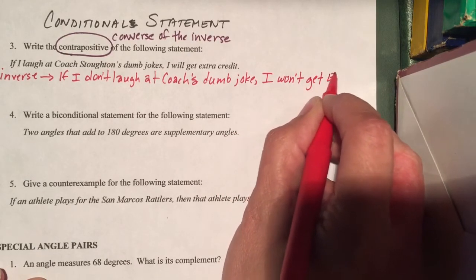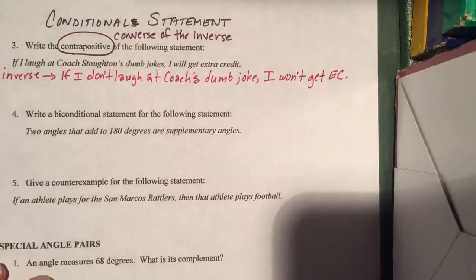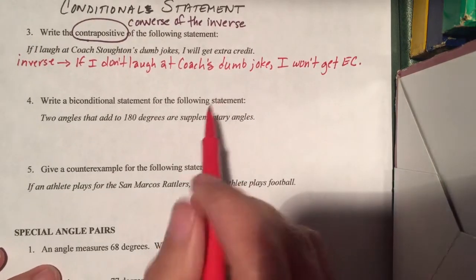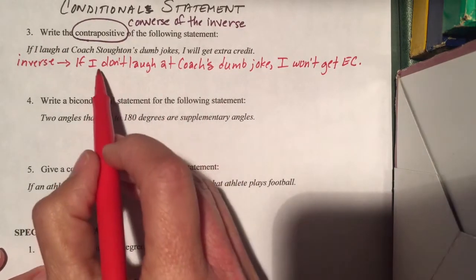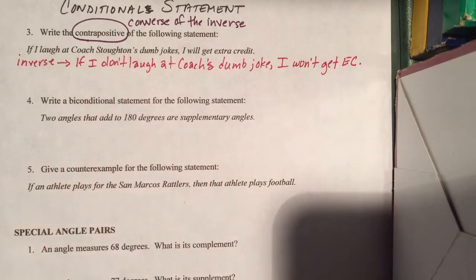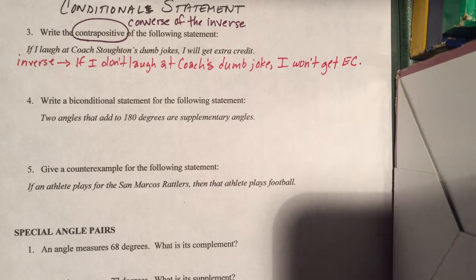I'm going to abbreviate it as 'extra credit' — I want you to write it out, but I'm running out of space here. So this is the inverse; this is not the contrapositive, we're just getting there. Now I want to find the converse of the inverse, and that will be my contrapositive.